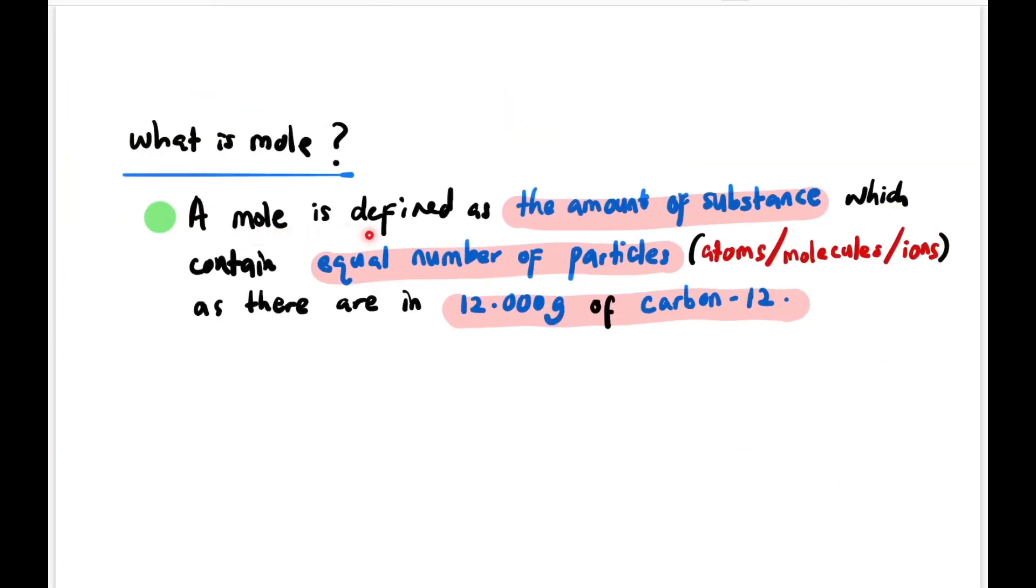What is mole actually? A mole is defined as the amount of substance which contains an equal number of particles—atoms, molecules, and ions—as there are in 12.00 grams of carbon-12.